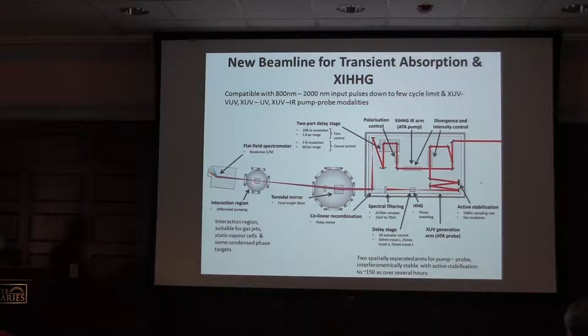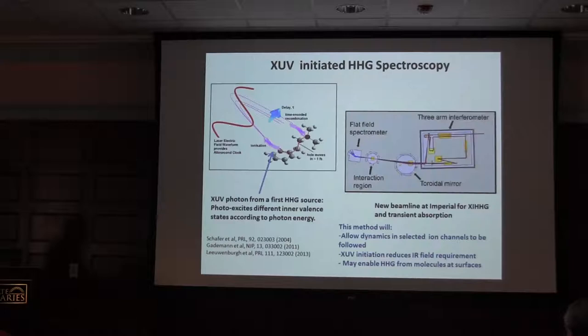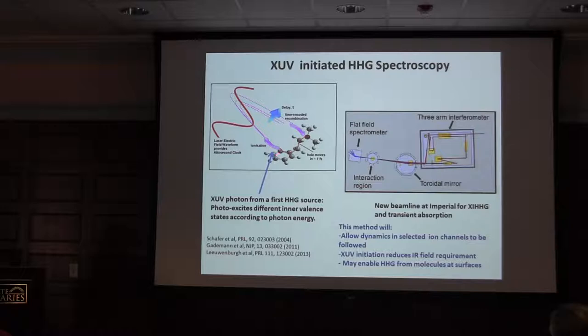We generate high harmonics in one gas jet, and then use those for photoionization in the second gas jet to generate harmonics. That's working. That's what I want to talk about. I want to talk about this idea going back to our intra-cycle measurement method, where we are going to initiate the hole using an XUV photon from an isolated attosecond pulse generation upstream.